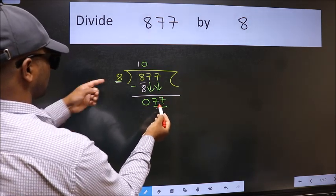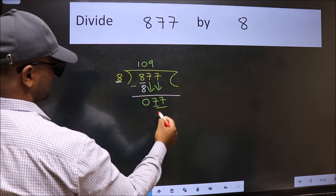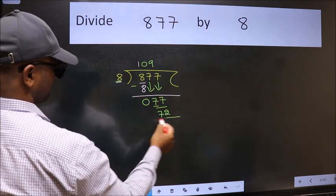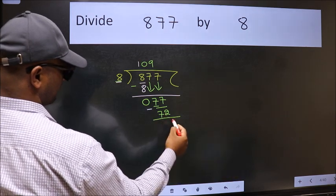Now 77. A number close to 77 in 8 table is 8 nines 72. Now we should subtract. We get 5.